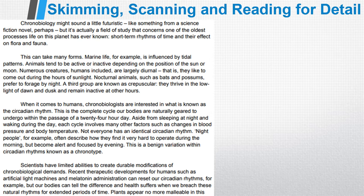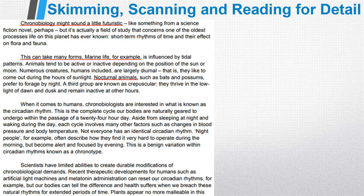The first topic sentence: 'Chronobiology might sound a little futuristic,' so I guess the rest of that paragraph will tell us what chronobiology is. The second topic sentence: 'This can take many forms — marine life for example,' so I guess that paragraph will tell us about the different forms it can take. I might also look at the sentence starters of a sentence or two in the middle of a longer paragraph, and I notice it starts with 'nocturnal animals,' which is probably another form that chronobiology can take.